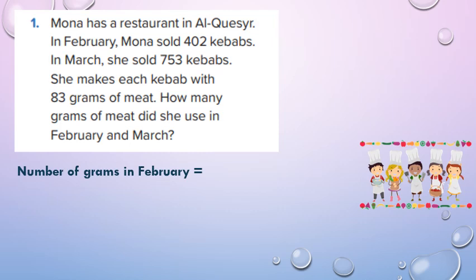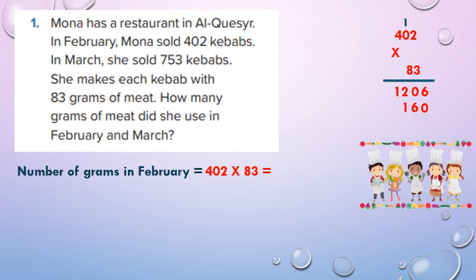First, number of grams of meat in February: 402 by 83 grams. In our draft: 3 by 2 equals 6, 3 by 0 equals 0, 3 by 4 equals 12. So put 0, then start with the 10s. 8 by 2 equals 16, 8 by 0 equals 0 plus 1 equals 1, 8 by 4 equals 32.